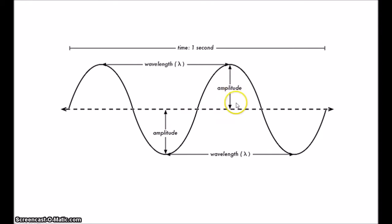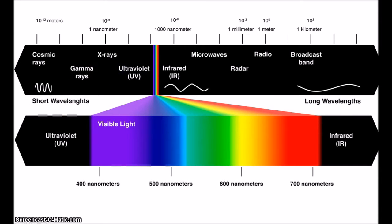Amplitude is the difference between a peak and a trough. Shorter wavelengths carry greater energy, as do higher amplitudes. Putting things very simplistically, we might say that wavelength determines the colour of the light, as you can see on the spectrum, whereas amplitude determines the brightness or intensity of the light.